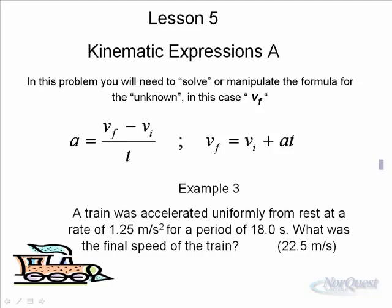Example number three: a train was accelerated uniformly from rest—that means that the initial velocity was zero—at a rate of 1.25 meters per second squared for a period of 18 seconds. Here's a train starting from rest, pulling away from the station at a fairly slow rate of 1.25 for 18 seconds. What's the final speed of the train? Zero plus 1.25 times 18 will give you an answer of very close to 22.5 meters per second.